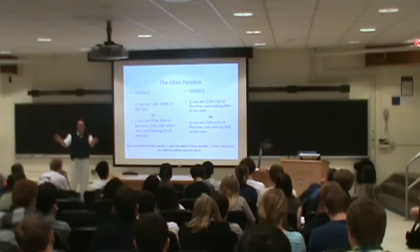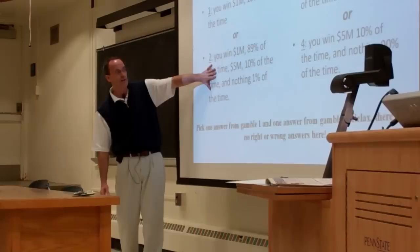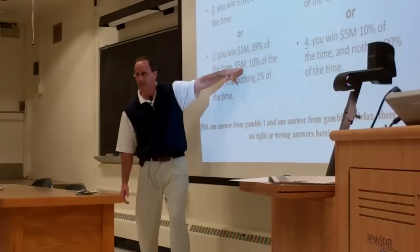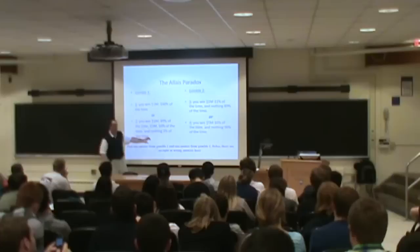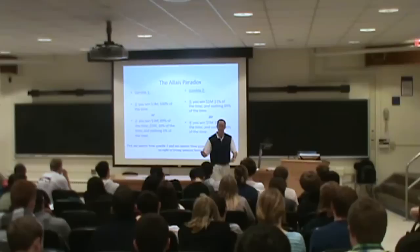A bunch of you chose two and four. Why are you picking two and four? It's partly because you're looking at this from a gamble standpoint — which of these is the best bet? The expected value is higher for gamble two than gamble one. You always win a million with option one, but because there's a 10% chance of five million and only a 1% chance of nothing, the overall average is higher for option two. And four is a better bet than three because a 10% chance of five million is worth more than an 11% chance of one million. So the economist goes: two and four — I get it, no problem.